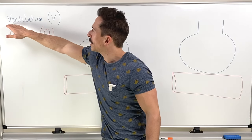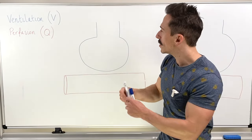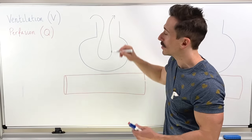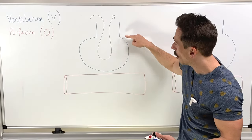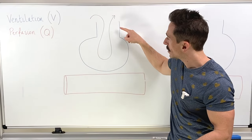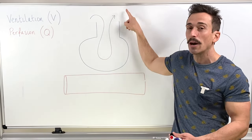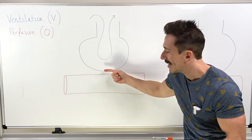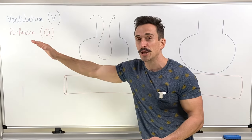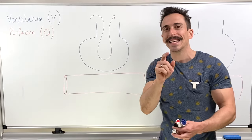We've got ventilation here, denoted by the V — V for ventilation — and it's referring to the amount of gas or air that moves into and out of an alveolus. What I've drawn up here is an alveolus. Ventilation refers to the amount of gas that moves into and out of the alveolus that can participate in gas exchange.